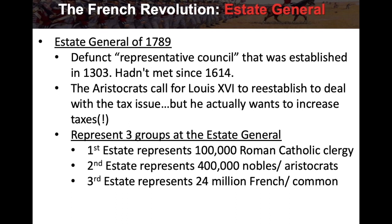In this Estate General, there is representation for three groups. The first Estate represents 100,000 Roman Catholic clergy. The second Estate represents 400,000 nobles or aristocrats. The third Estate represents 24 million French common people. These representatives are called Estates — one for the clergy, one for the nobles, and one for the French common people.